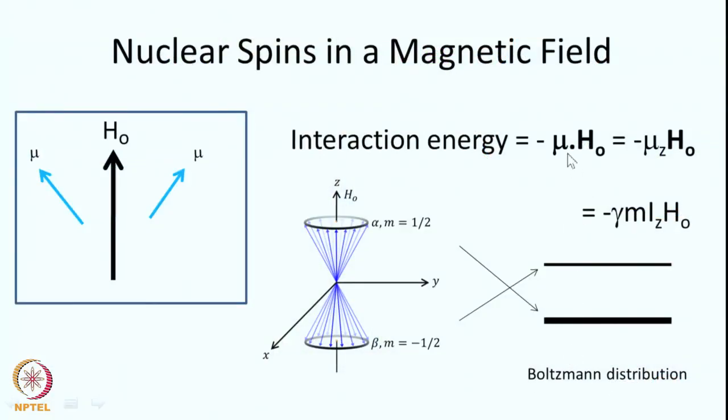When there is no magnetic field applied, all orientations of the nuclear spins have the same energy — their energy levels are degenerate. However, when a magnetic field is applied, the degeneracy of these different orientations gets lifted because of the interaction of the nuclei with the magnetic field. The interaction energy is given by minus mu dot H-naught, where mu is the magnetic moment and H-naught is the applied field.